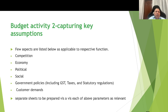Activity number two: capturing the key assumptions. Few aspects applicable to all functions include the impact of competition, economy, political, social, government policies, and customer demands on the performance of the function, which will affect the budget. A separate sheet is to be prepared for each of the above parameters — competition, economy, political, etc. — and these can run to many pages if prepared thoroughly by the cross-functional team.